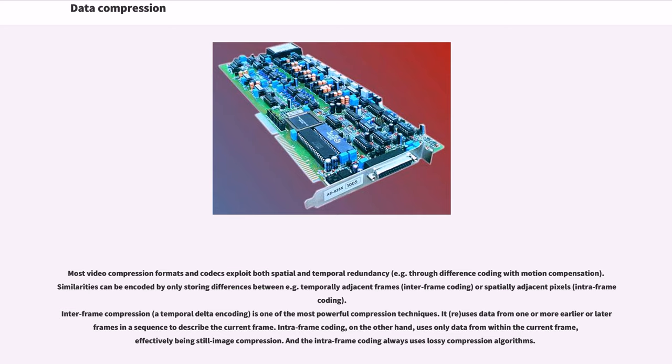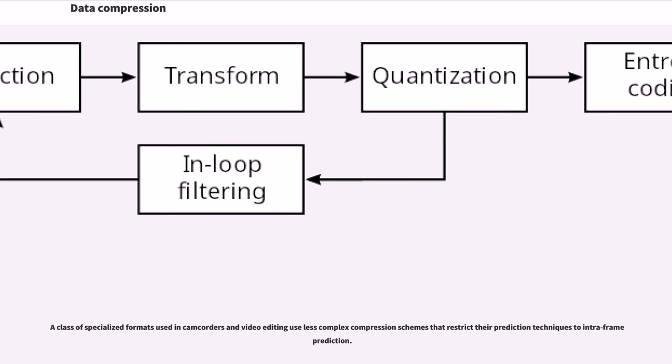Inter-frame compression, a temporal delta encoding, is one of the most powerful compression techniques. It reuses data from one or more earlier or later frames in a sequence to describe the current frame. Intra-frame coding, on the other hand, uses only data from within the current frame, effectively being still image compression. The intra-frame coding always uses lossy compression algorithms. A class of specialized formats used in camcorders and video editing use less complex compression schemes that restrict their prediction techniques to intra-frame prediction.